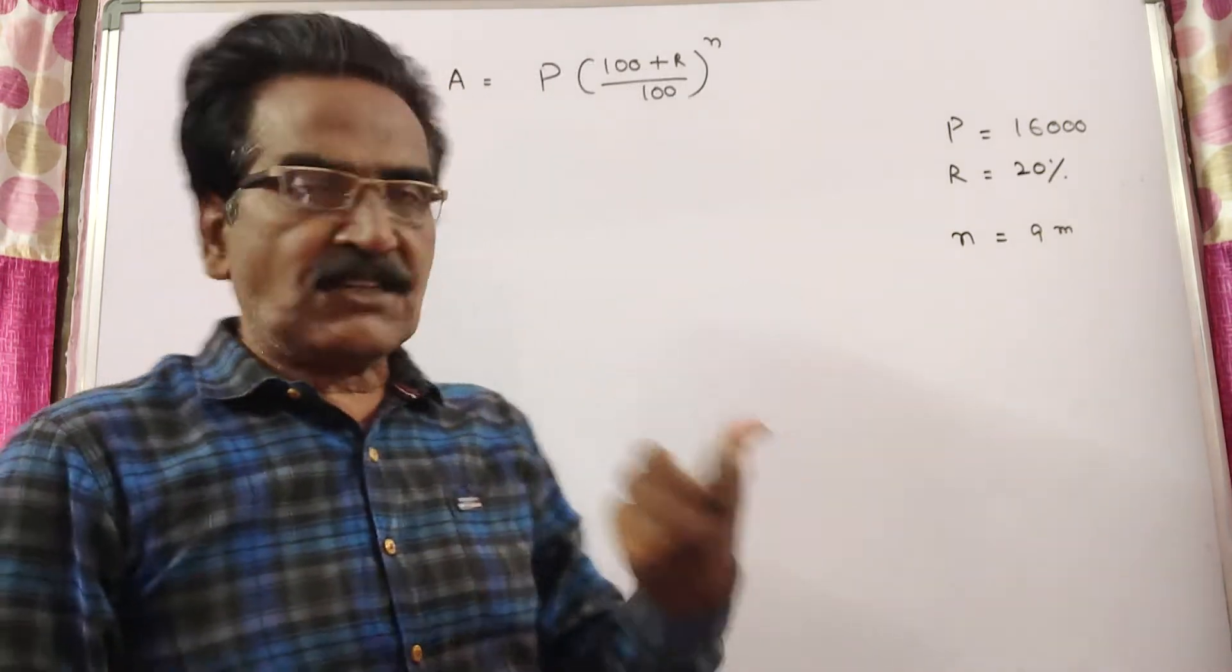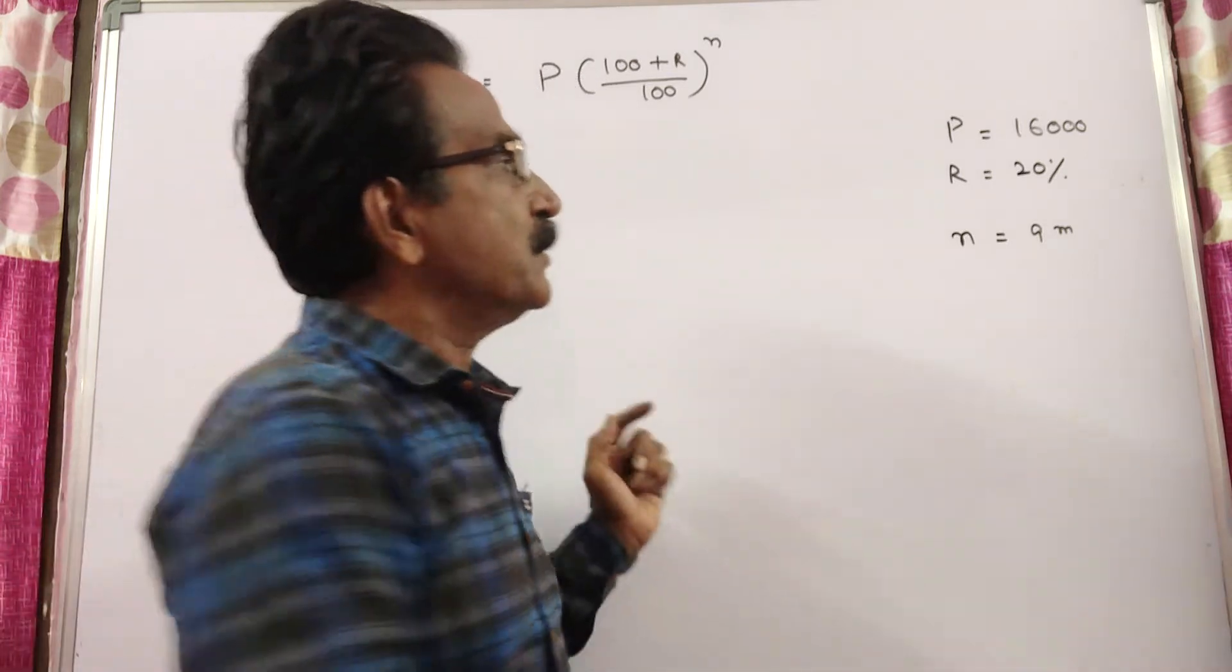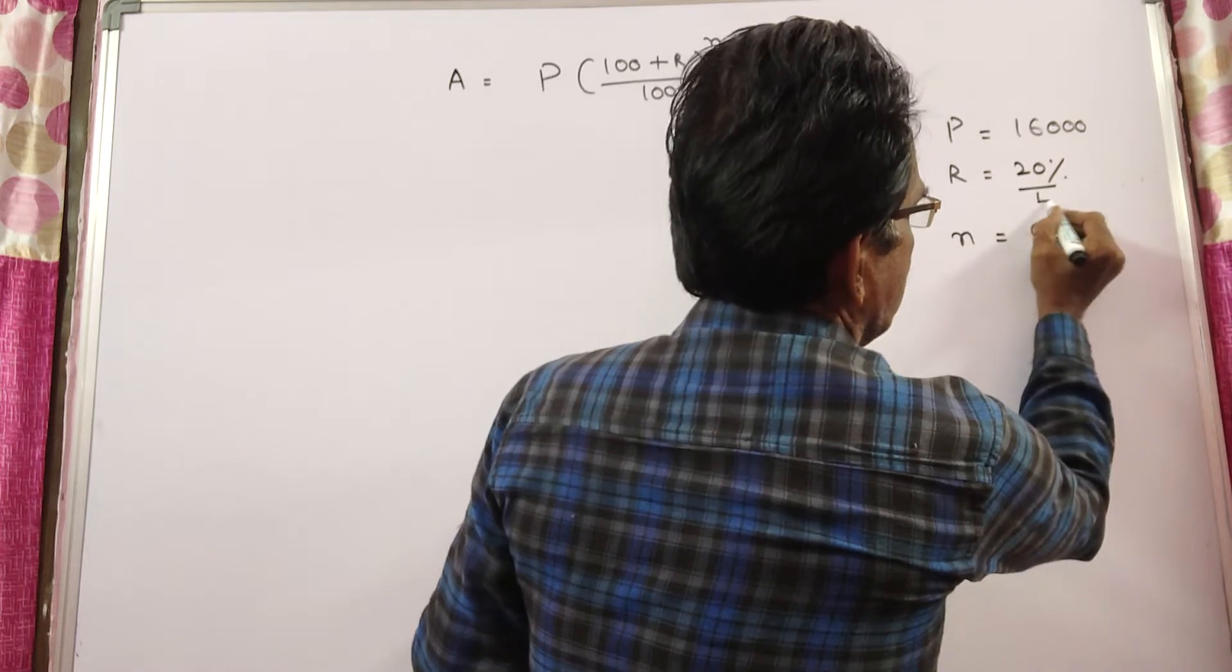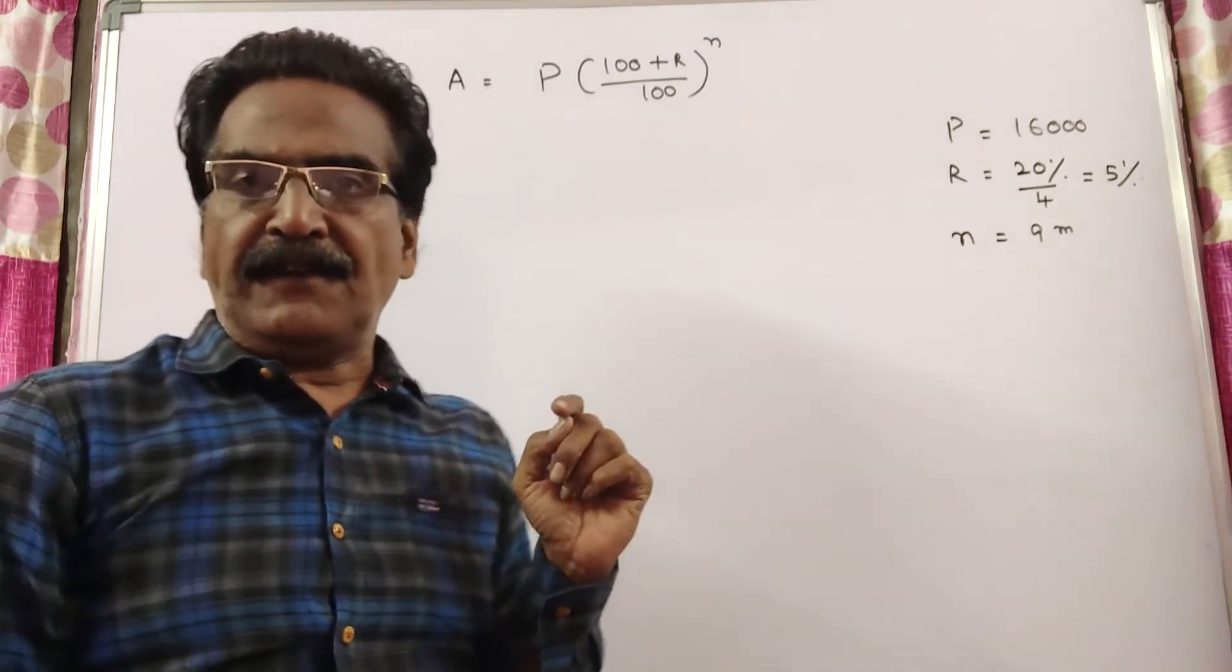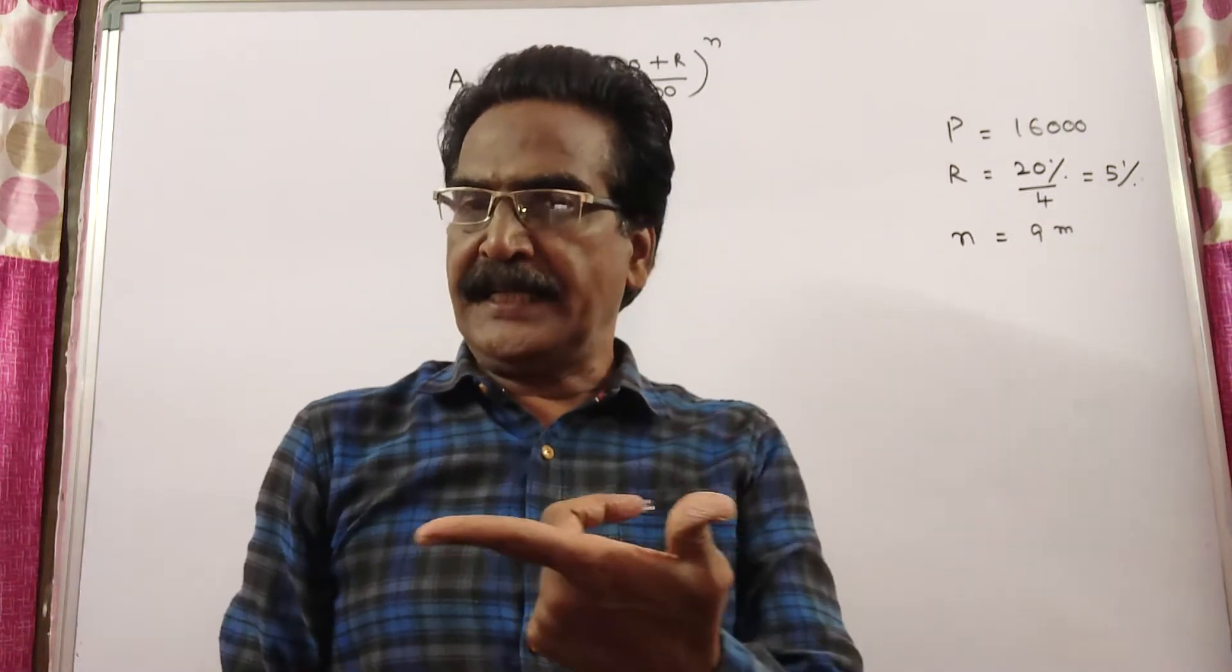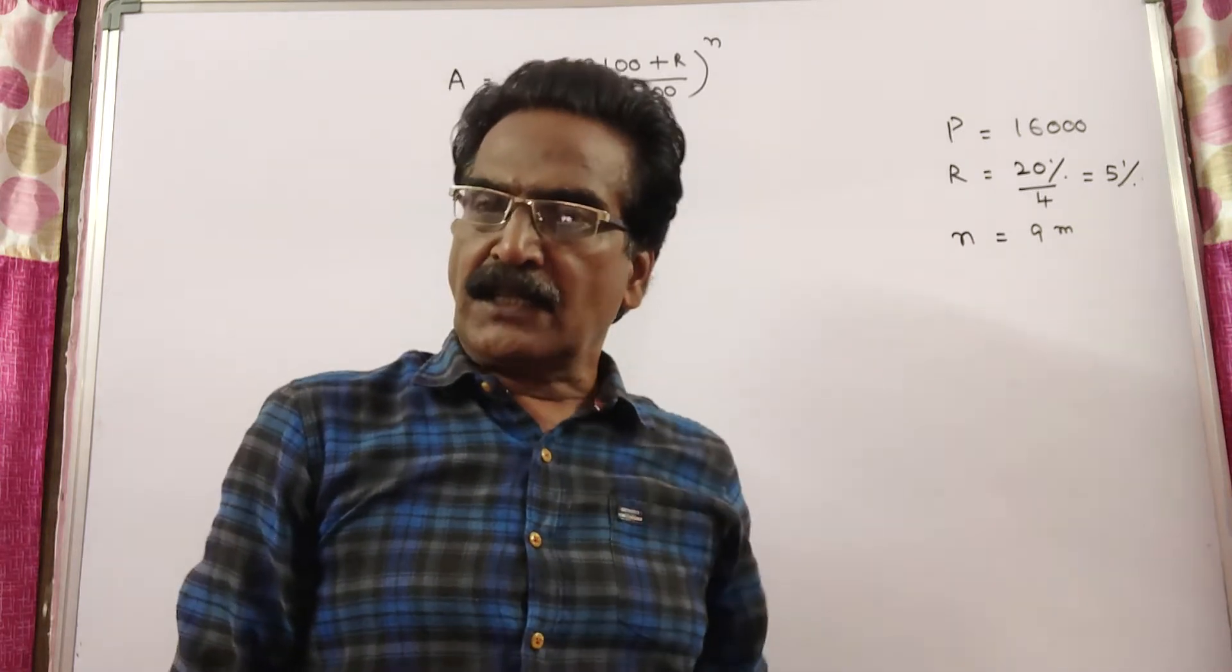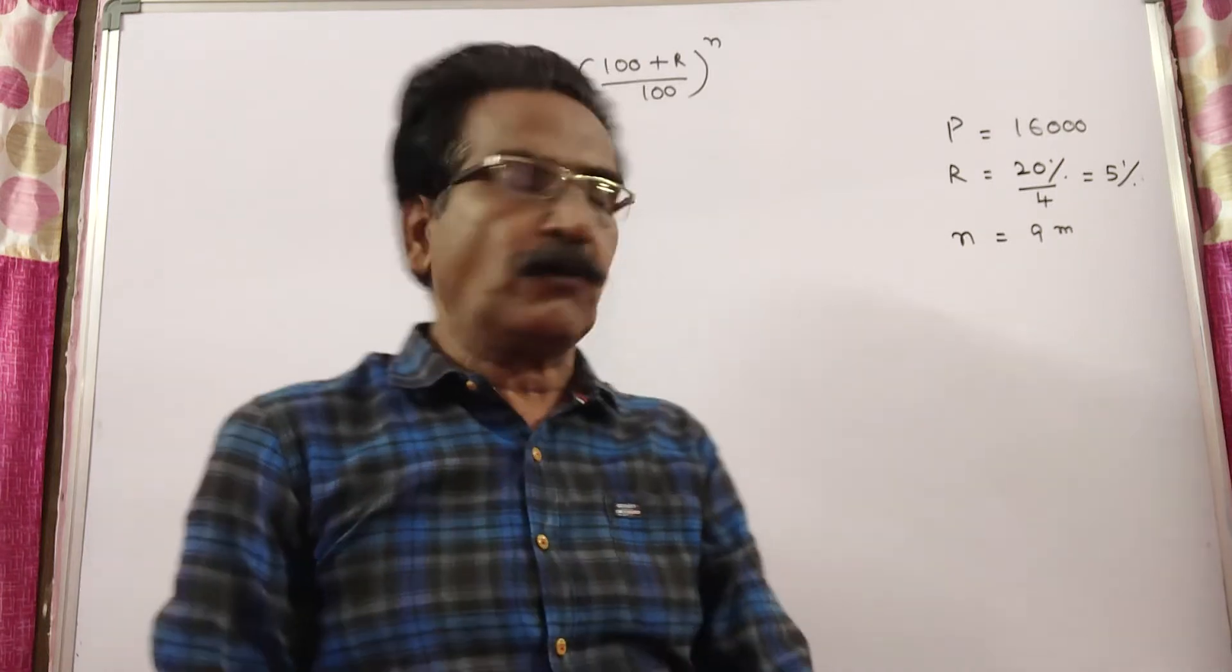Friends, this is quarterly compounded. So, R must be taken as R by 4 that is equal to 5%. If it is half yearly compounded, we take R as R by 2. If it is quarterly compounded, we take R as R by 4.